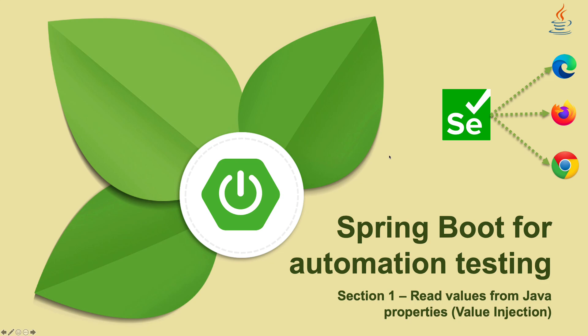In this video we're going to talk about reading values from a Java properties file using Spring Boot's @Value injection. This is one of the most commonly used things in automation testing — reading values from a properties file to understand what browser we'll be working with, what the application's URL is, what environment the application is running in like staging, testing, development, production, or pre-prod, and also reading database connectivity strings.